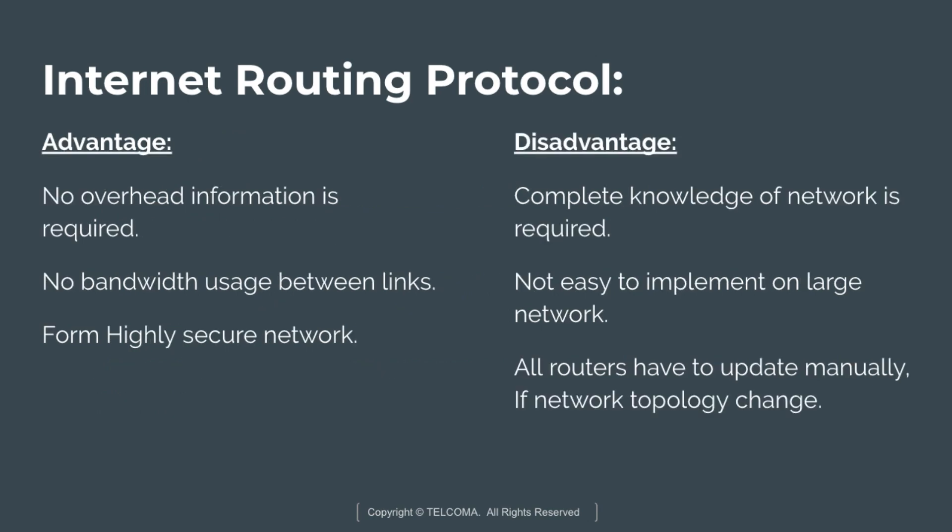The advantages and disadvantages of static routing are as follows. Advantages include: it requires no overhead information, there is no bandwidth usage between links, and it forms a highly secure network. Disadvantages are: it requires complete knowledge of the network, it is not easy to implement on large networks, and all routers have to be updated manually if the network topology changes.